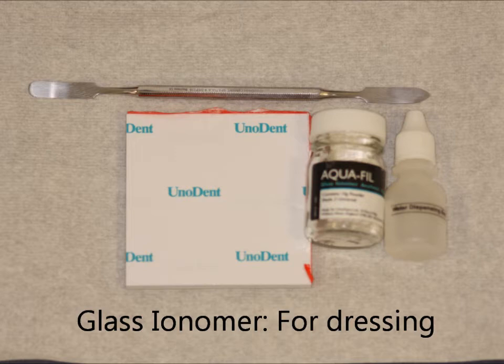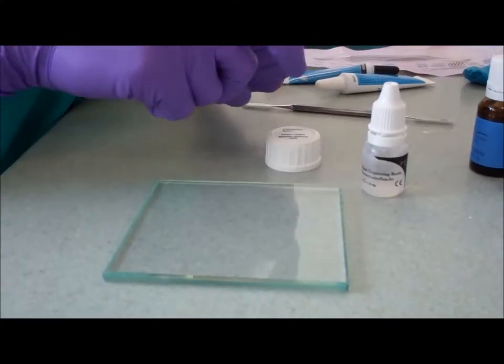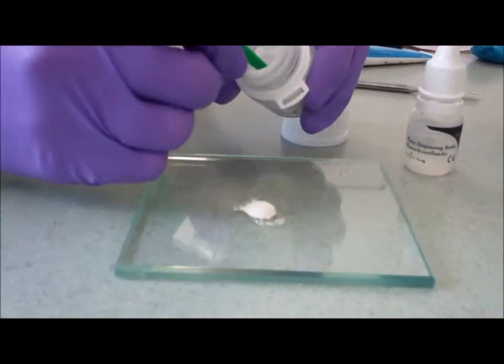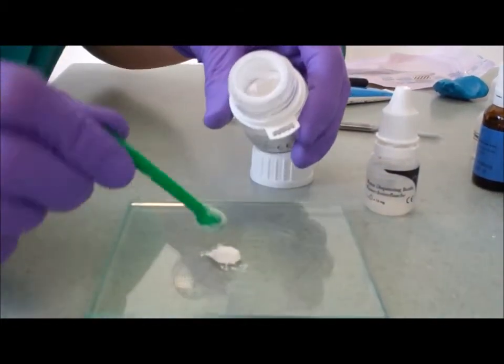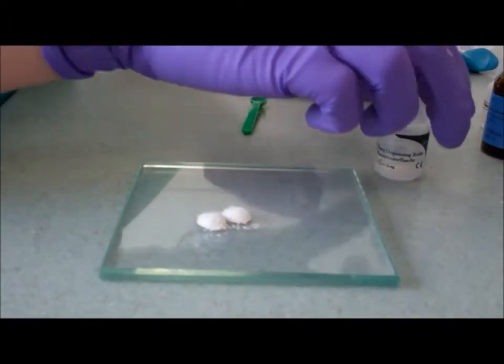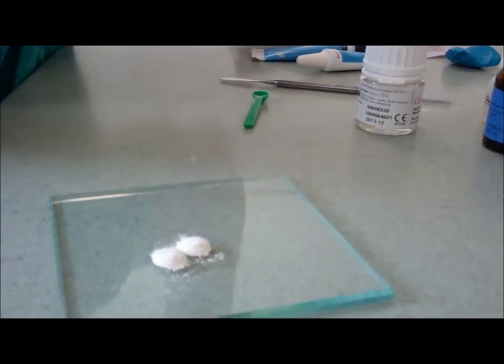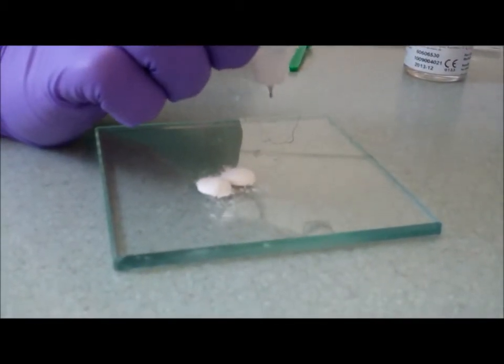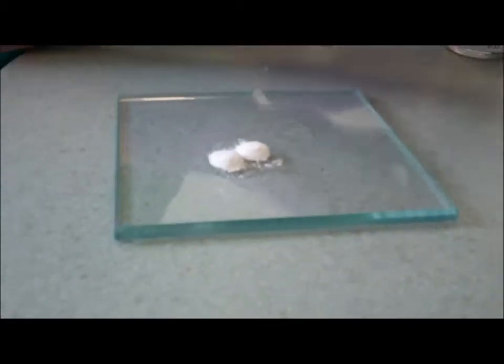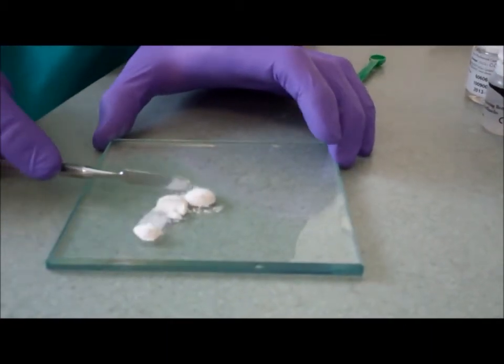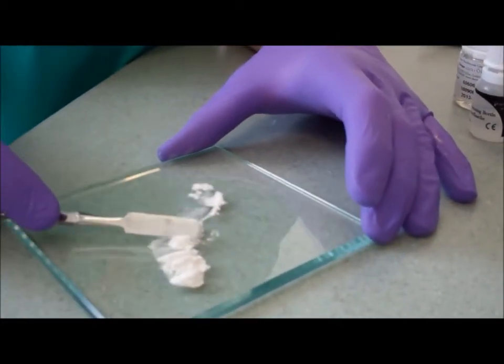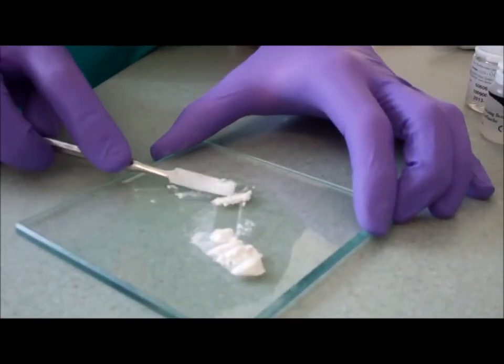If you want to mix glass ionomer for a dressing, again put out a suitable amount of powder, and then an equal number of drops from a dropper bottle onto the slab. Split your powder into increments, and gradually mix each increment at a time, making sure the powder is well incorporated into the liquid.